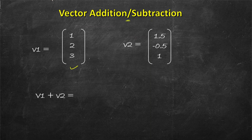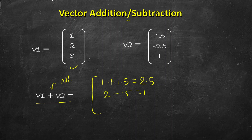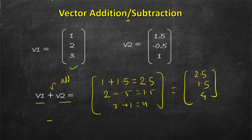Let's say we have a couple of vectors each having three elements. For performing vector addition and subtraction you should have an equal number of elements. If we write v1 plus v2 we do element-wise addition: 1 plus 1.5 equals 2.5, then 2 minus 0.5 equals 1.5, and 3 plus 1 equals 4. The result is a vector with the same number of elements: 2.5, 1.5, and 4. The same is true for subtraction.